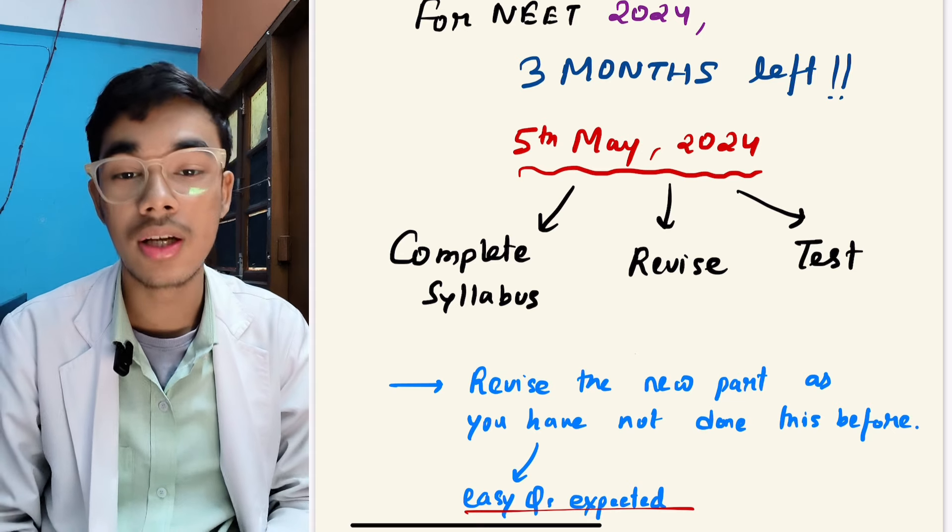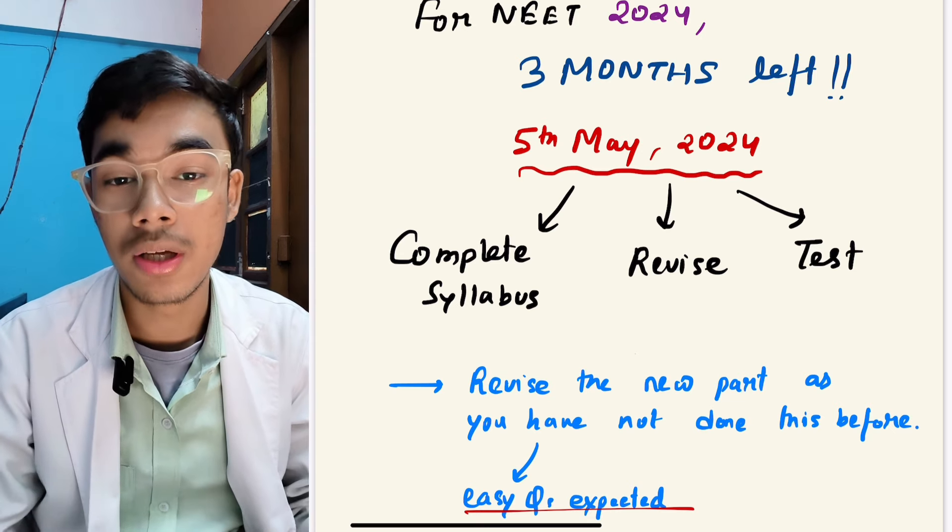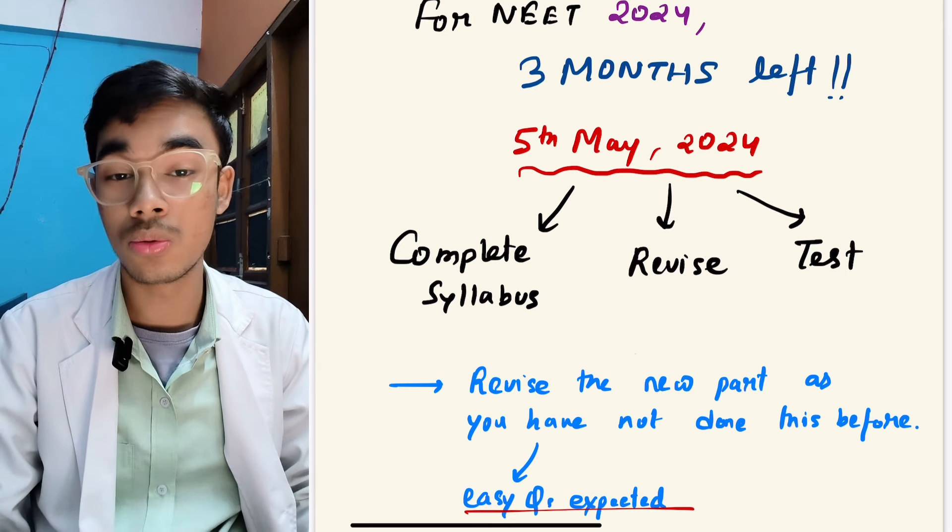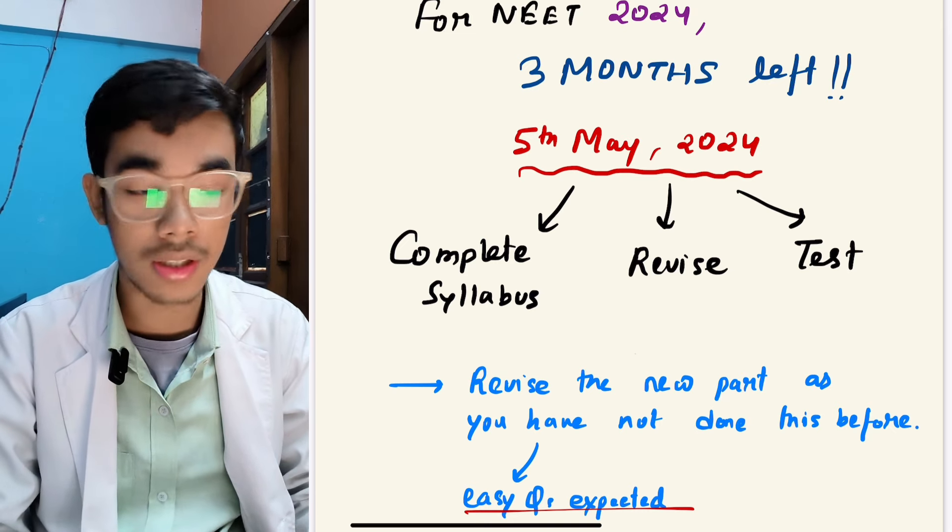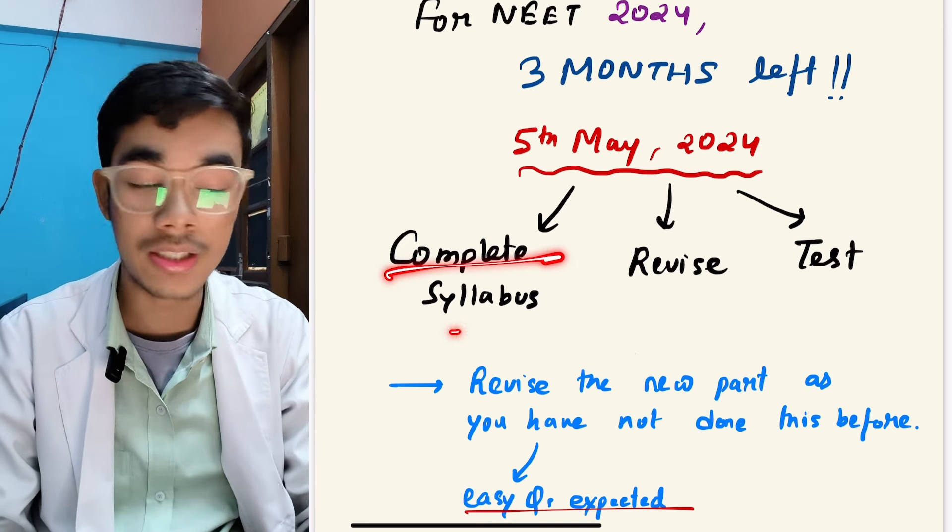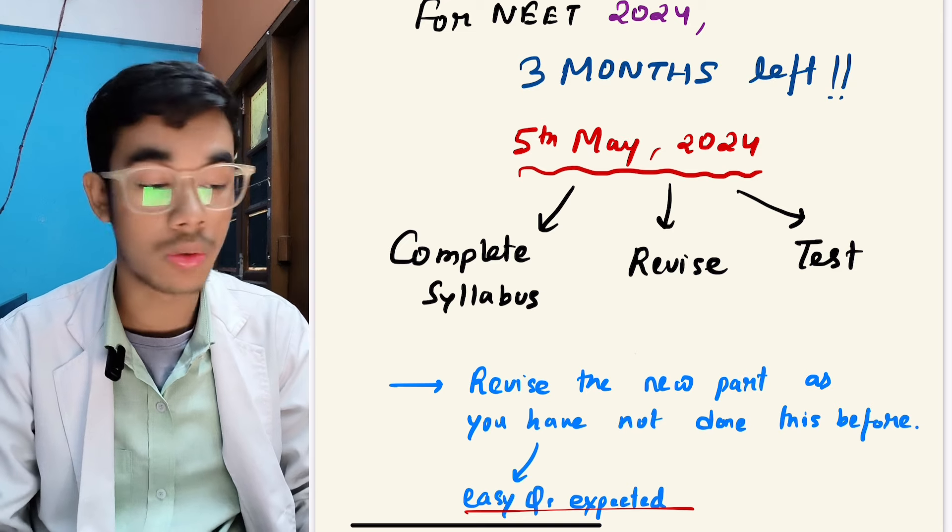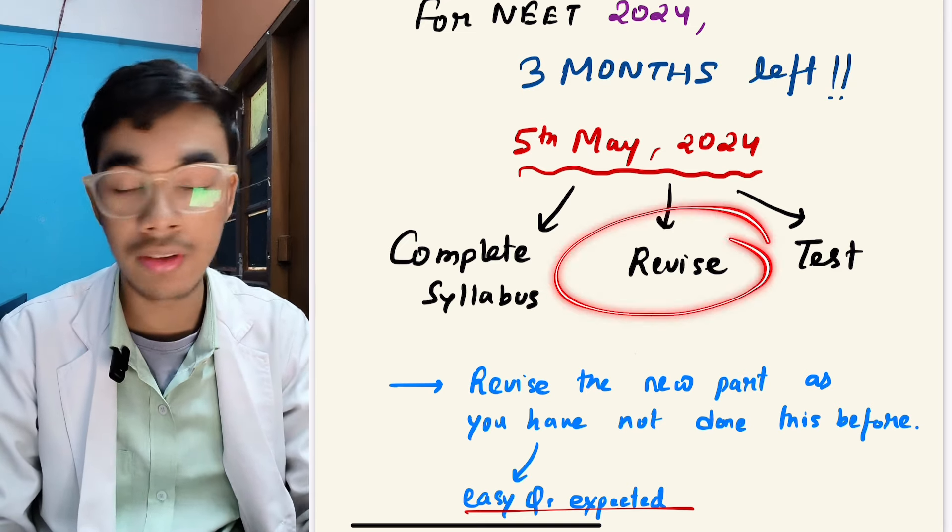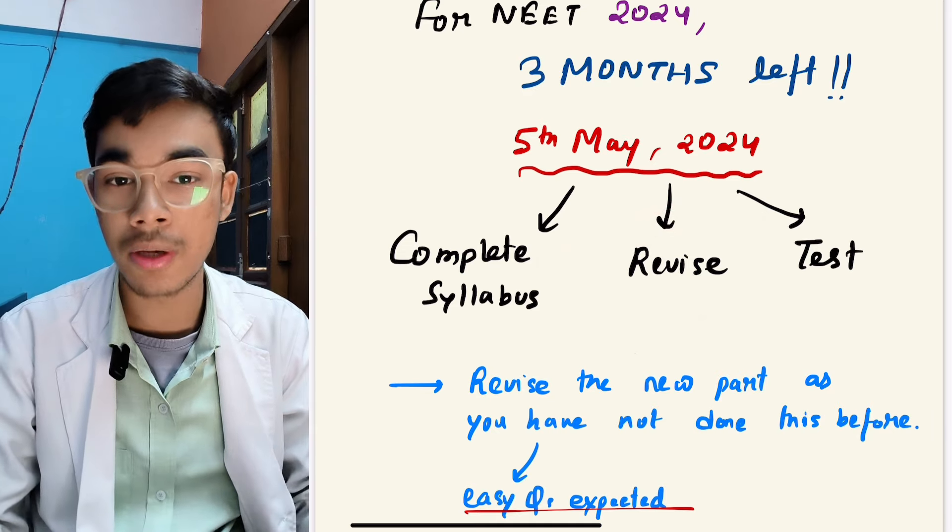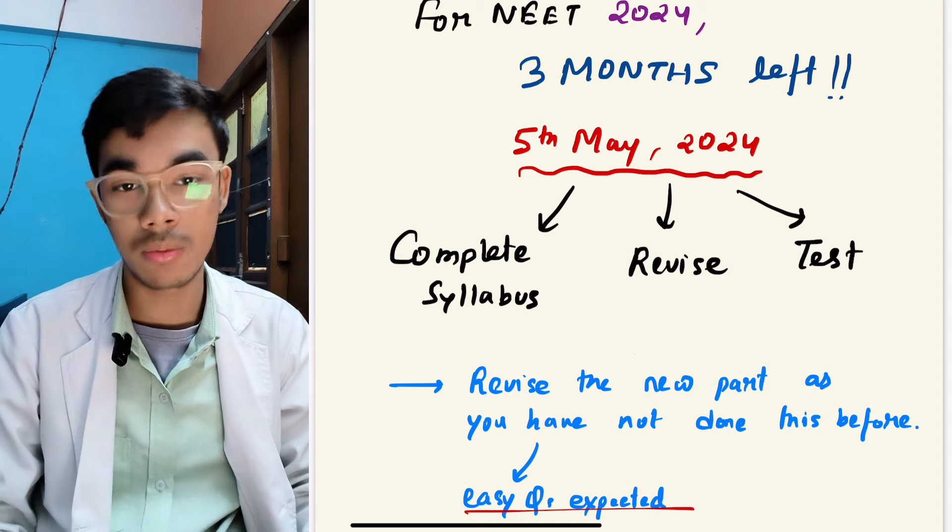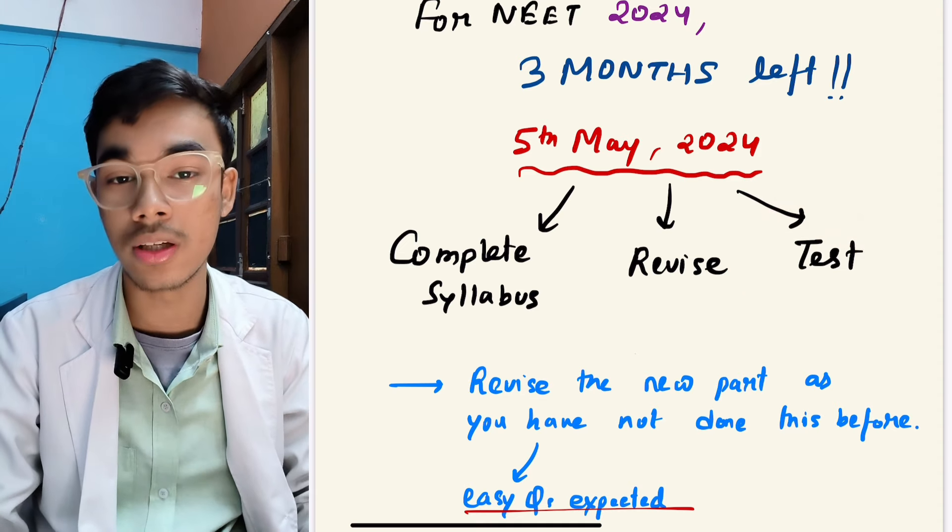Before we talk about the 2024 cutoff, what you should do right now - many of you are in the preparation phase, so continue what you're doing. If completed syllabus is still remaining then finish it off. Some new syllabus has come, complete that as well. After that revise daily. Whatever topics you are doing, keep doing them, don't stop.